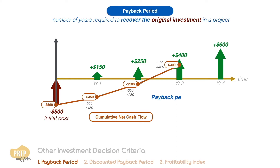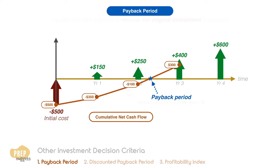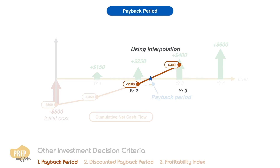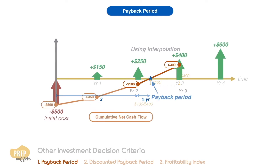The payback period is the point where the cumulative net cash flow becomes zero. We can see that it is between two to three years. Using interpolation, this is a quarter into the third year, so the payback period is two and a quarter years.